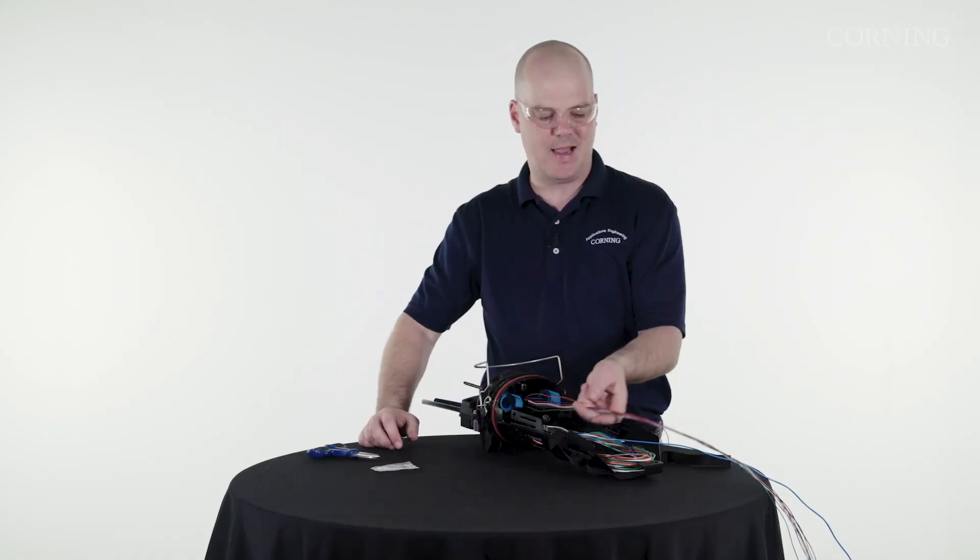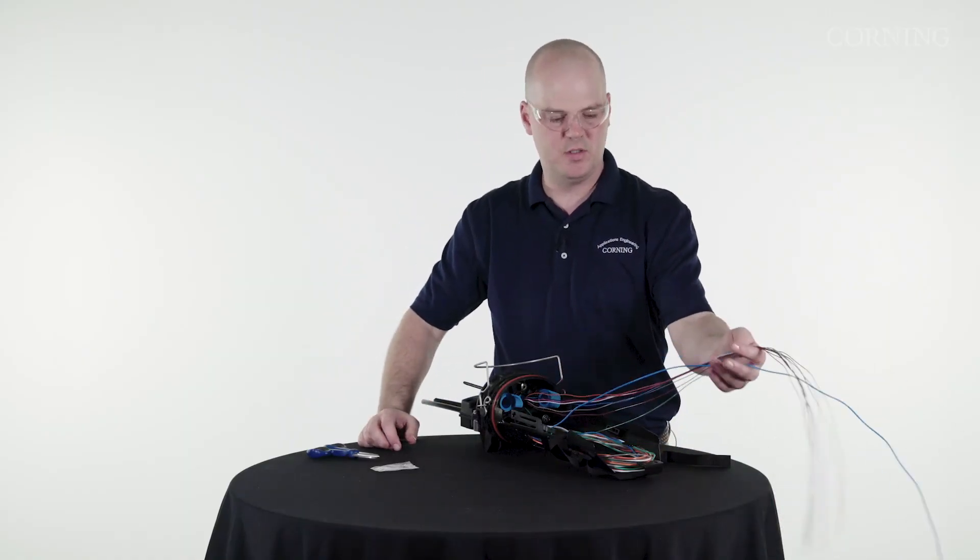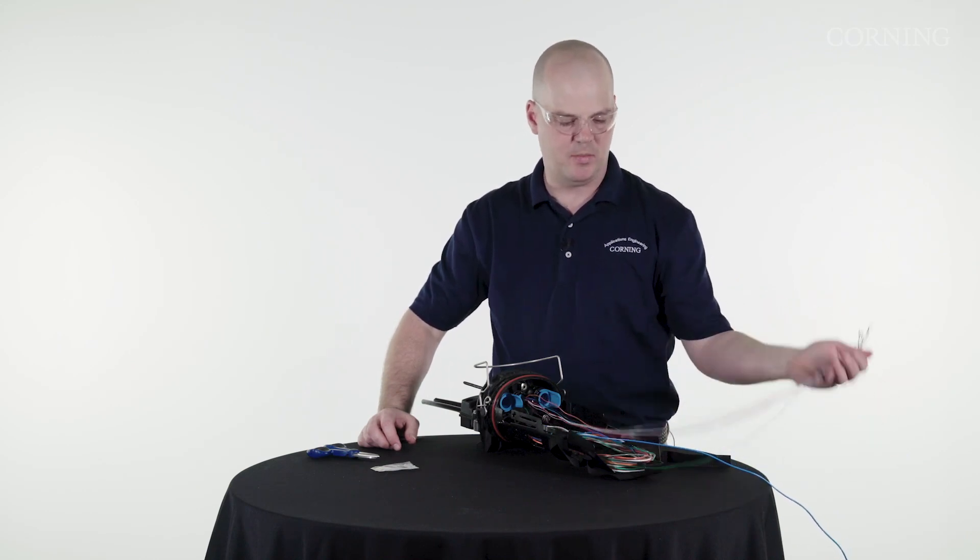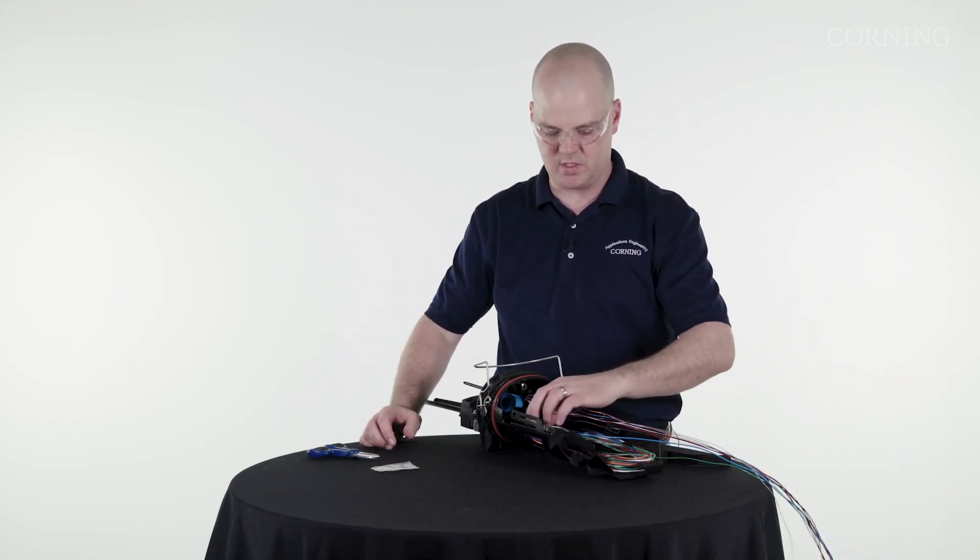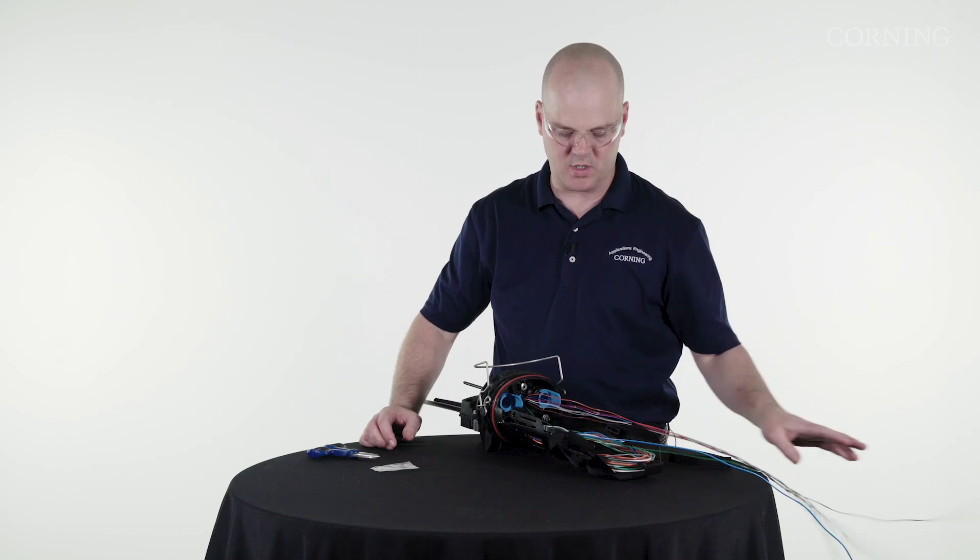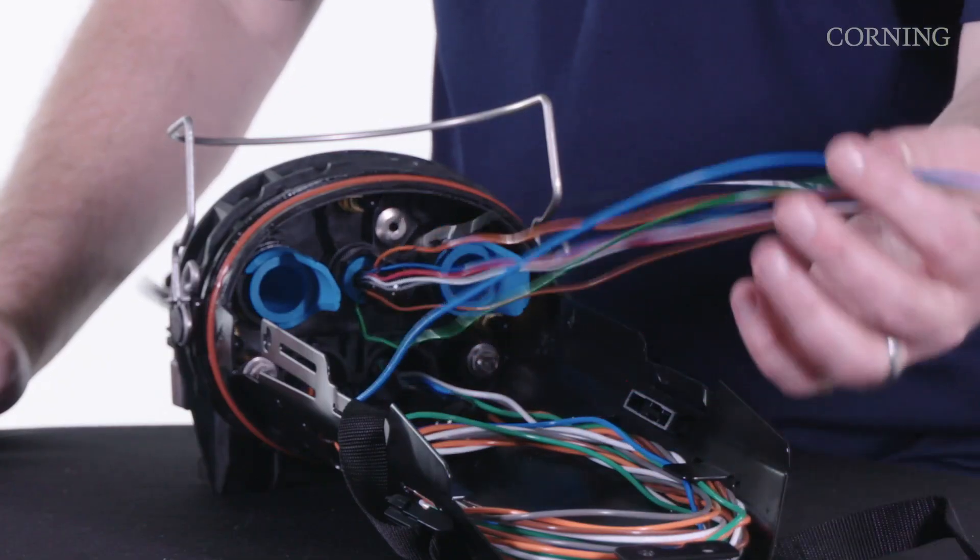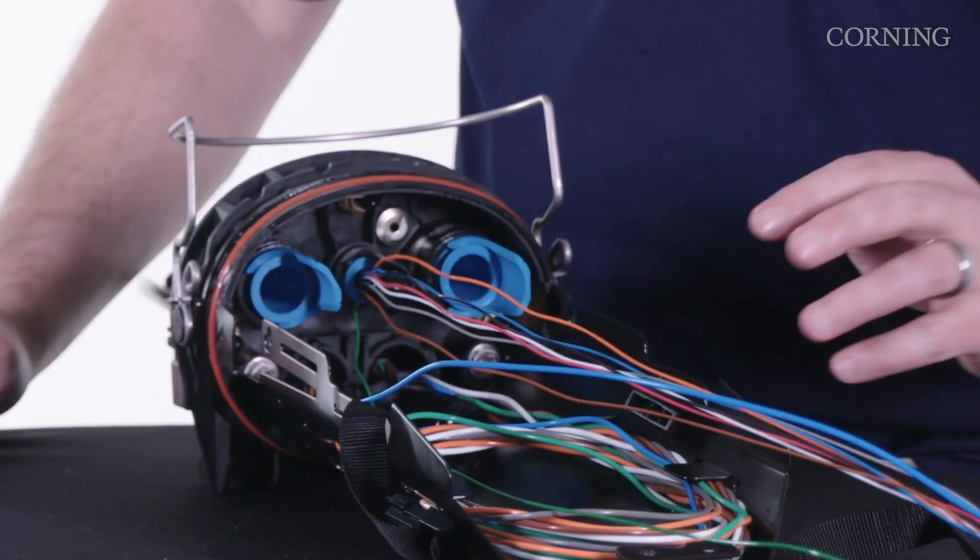So now what I want to do is access each one of my buffer tubes to get to the fibers I want to splice, and put any slack, so this particular one we're just simulating maybe a single drop, so I might cut some of these buffer tubes and then splice to this one. So we'll put a splice tray in here and splice it up.